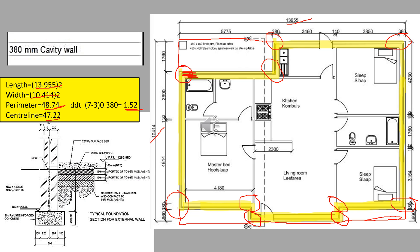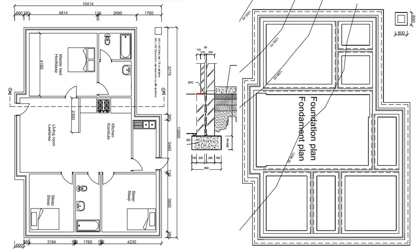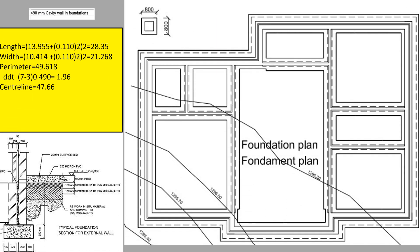We shall now find out how to calculate the center line for the wall below the ground — the foundation. As you can see in this plan, this is the wall below the ground, drawn in red. Looking at the structural plan, that wall is on the same level as the one above the ground, but the spread is on the outside, which is 110. So how do we find the center line for the 490 millimeters cavity wall below the ground?